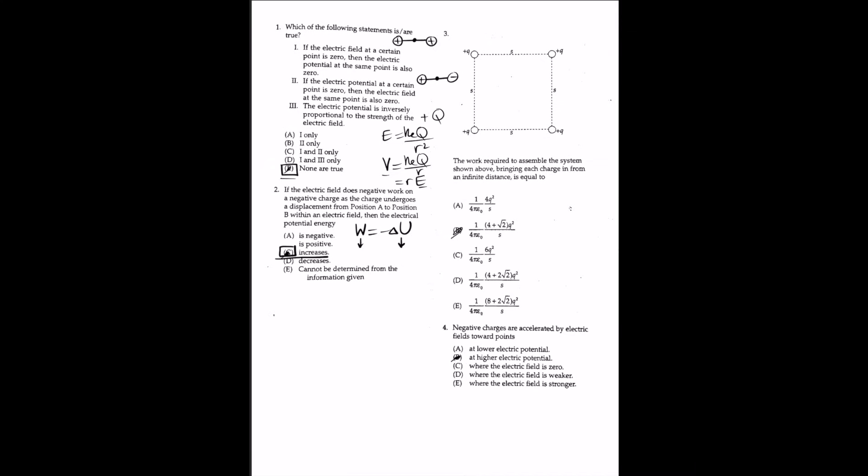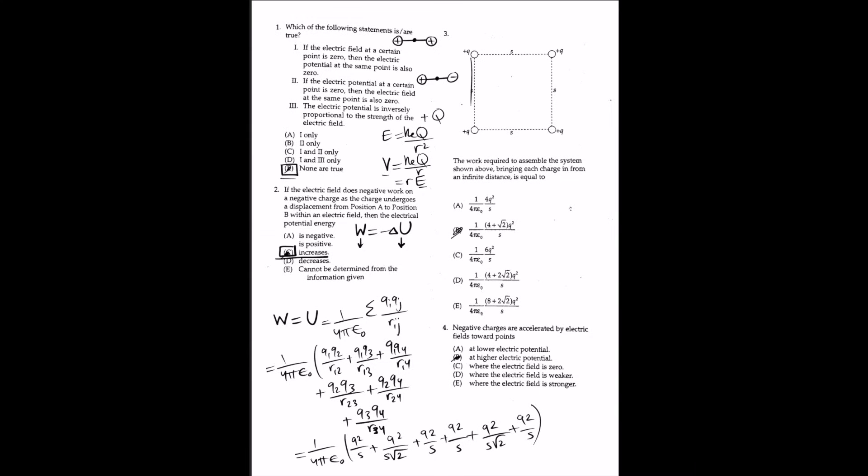For question 3, the work required to assemble the system, bringing each charge in from an infinite distance, equals the potential energy of the system: W = U = (1/4πε₀) × Σ qᵢqⱼ/rᵢⱼ. Including each pair — 1 with 2, 3, and 4; 2 with 3 and 4; and 3 with 4 — the distances equal s, and using the Pythagorean theorem the diagonal distance is √2s. Substituting gives U = (1/4πε₀)(q²/s)(4 + √2), so the answer is B.